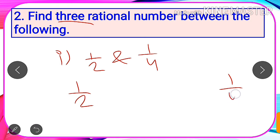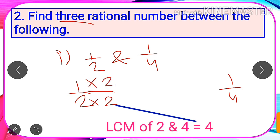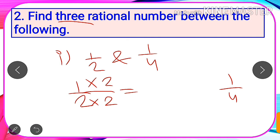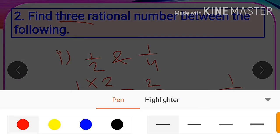We need to make the denominator 4 in both cases. Since 1 by 4 already has denominator 4, we only need to change 1 by 2. To make the denominator 4, we multiply it by 2, but we must multiply both numerator and denominator by 2 so the fraction remains equal to 1 by 2. After multiplying numerator and denominator of 1 by 2 by 2, we get 2 by 4. So our two numbers are now 2 by 4 and 1 by 4.